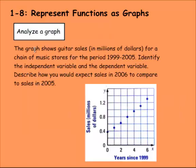Here's a real world situation. The graph shows guitar sales in millions of dollars for a chain of music stores for the period of 1999 to 2005. Identify the independent variable and the dependent variable. Describe how you would expect sales in 2006 to compare to sales in 2005. So first thing we need to do is identify the independent variable and the dependent variable.